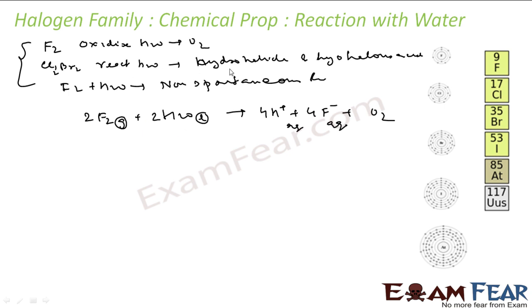As I told, chlorine and bromine react with water to form hydrohalide and hypohalous acid. Let's see the reaction. I have chlorine react with water. It will form HCl in the aqueous form and HOCl in the aqueous form.